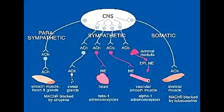Where are the muscarinic receptors located? Muscarinic receptors are found in the heart, smooth muscles, gland cells, and nerve terminals.